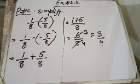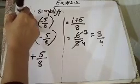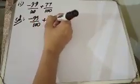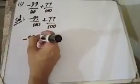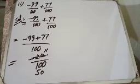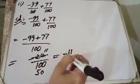इसके बाद question number 2 का second part करेंगे: minus 99 divided by 100 plus 77 divided by 100. Denominator फिर same है, numerator अलग-अलग है। तो लिखेंगे: minus 99 plus 77 divided by 100. 99 में से 77 minus किये तो answer आया minus 22 divided by 100. यह दोनों 2 से divide होंगे: 2 into 11 equals 22, 2 into 50 equals 100. Answer आया minus 11 over 50.